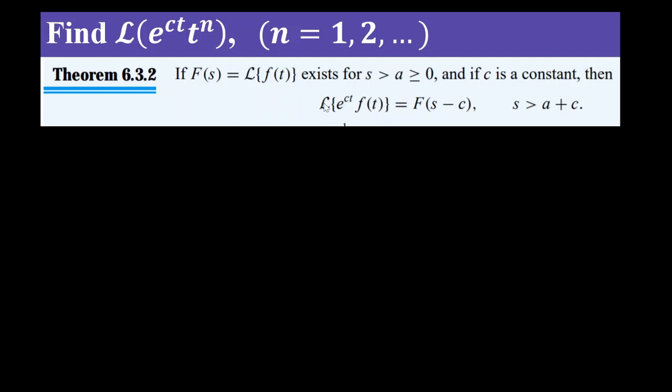Now let's look at L of e raised to ct into f of t. That is the function e raised to ct multiplied - this transformation we will do. For this particular f of t, the corresponding transformation is F of s. Here, e raised to ct will change s to s minus c.